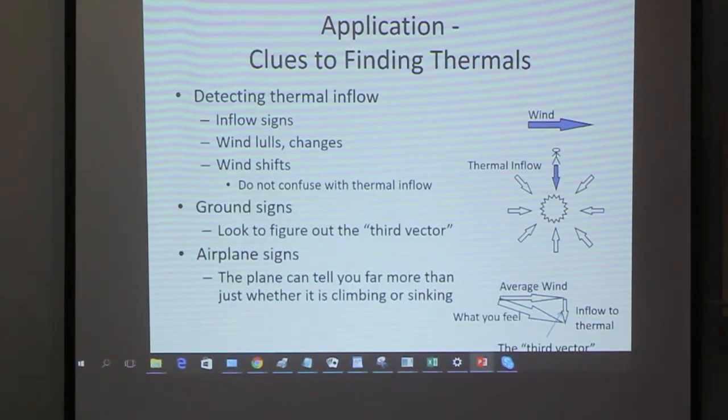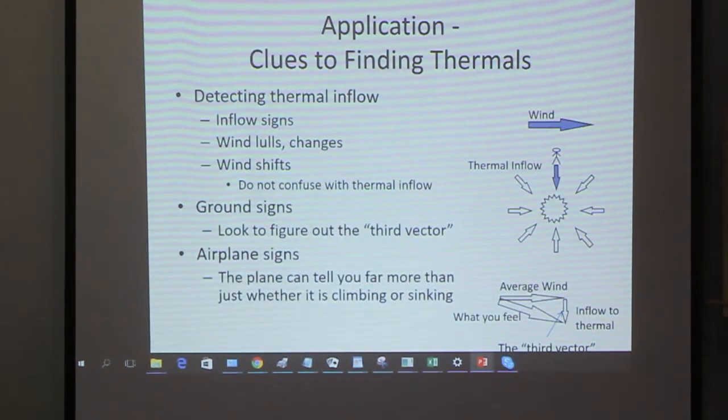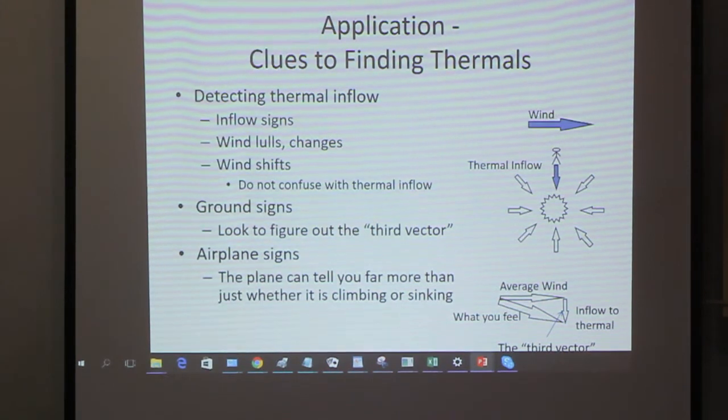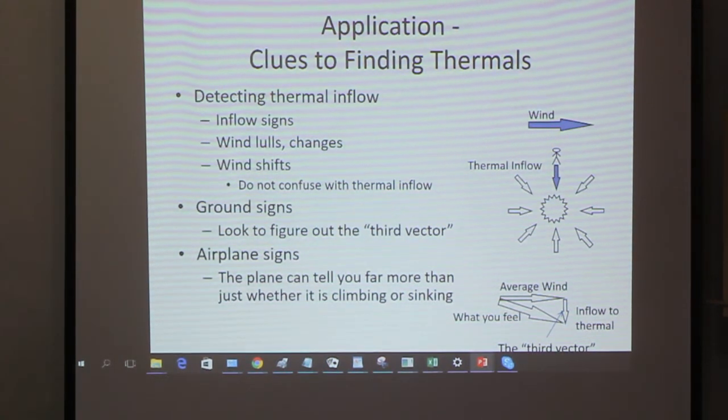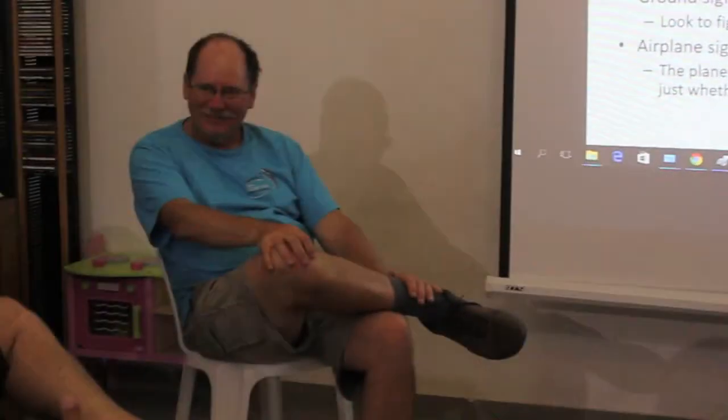There are stages to a thermal: the baby thermal, teenager, the mature thermal, son of thermal, and then the eldest thermal — and then she dies. You've got the young, vigorous, disorganized teenager with lots of energy. Then the mature thermal where the air is nice and smooth and everything's working. Then the geriatric thermal — she's beginning to run out of energy and breaking down.